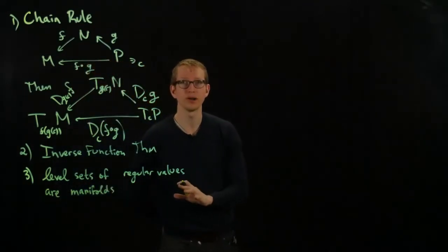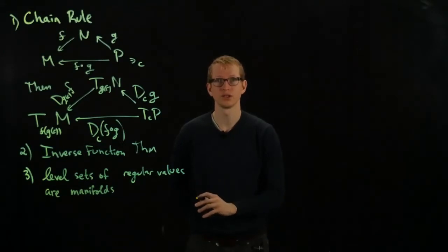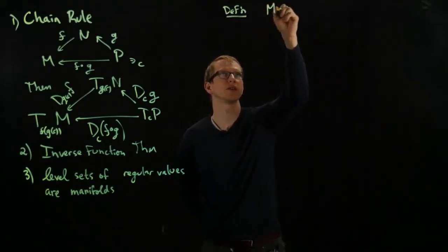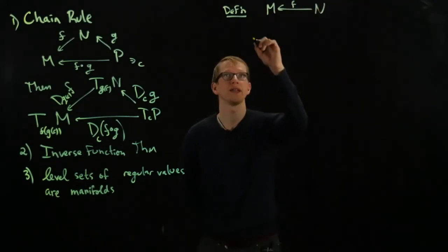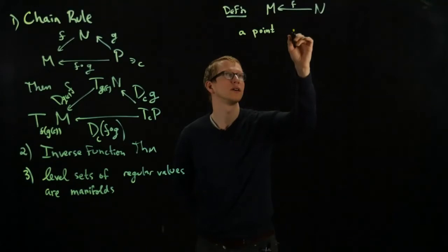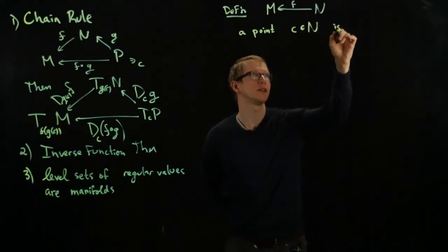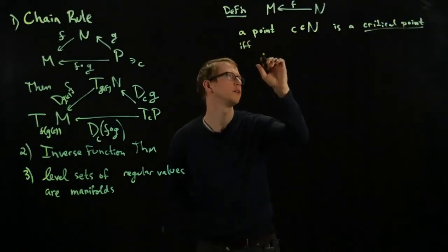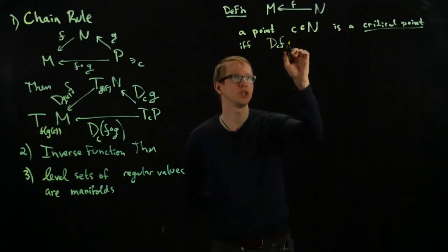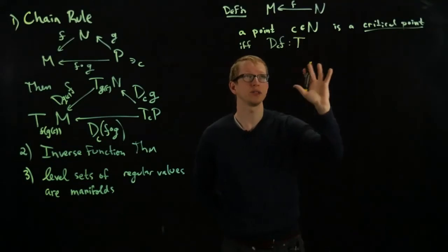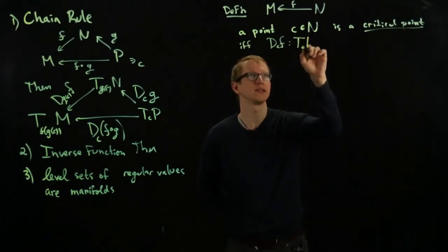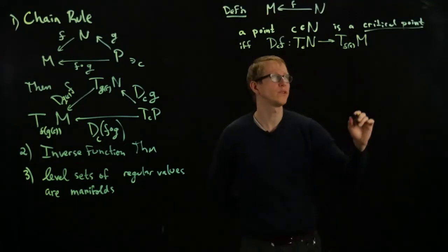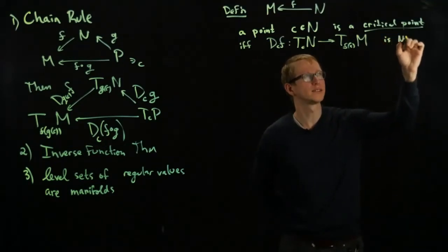And this last one is so important that I want to reiterate what the definitions were. So recall that if we have a differentiable function from one manifold to another, that a point C in N is a critical point if and only if the differential of F at C, which is the tangent space of N at C to the tangent space of M at the image point, if and only if this linear transformation is not onto.